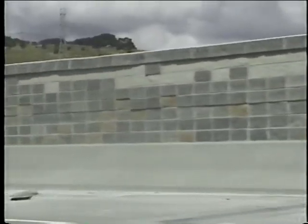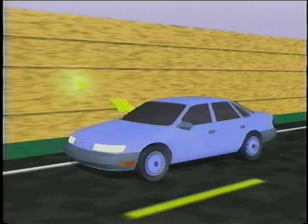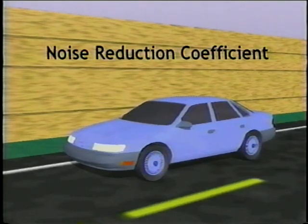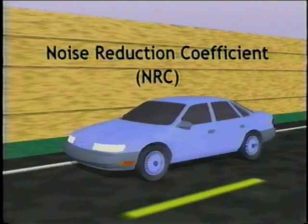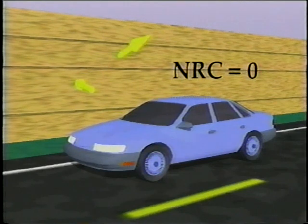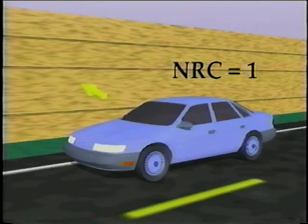As a general rule, the transmitted sound must be at least 10 dB lower than the diffracted sound in order for it to be ignored. The remaining noise is either absorbed by the noise barrier material or reflected. The ability of a barrier surface to absorb incident sound energy is characterized by its noise reduction coefficient, abbreviated NRC. NRC values are based on an average of absorption coefficients at individual frequencies, and theoretically range from 0 to 1. NRC values for an absorptive barrier generally range from 0.6 to 0.9.